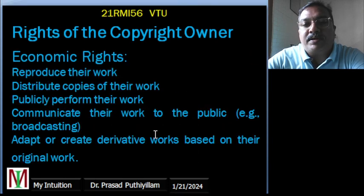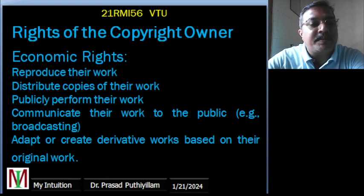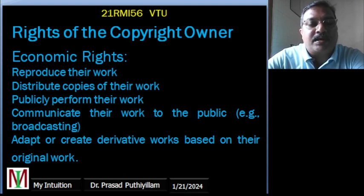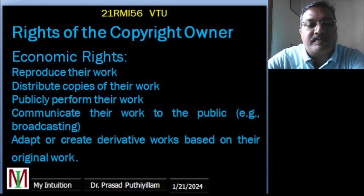Economic rights grant the copyright owner exclusive authority to reproduce their work, distribute copies of their work, publicly perform their work, communicate the work to the public such as by broadcasting it, and to adapt or create derivative works based on their original work.